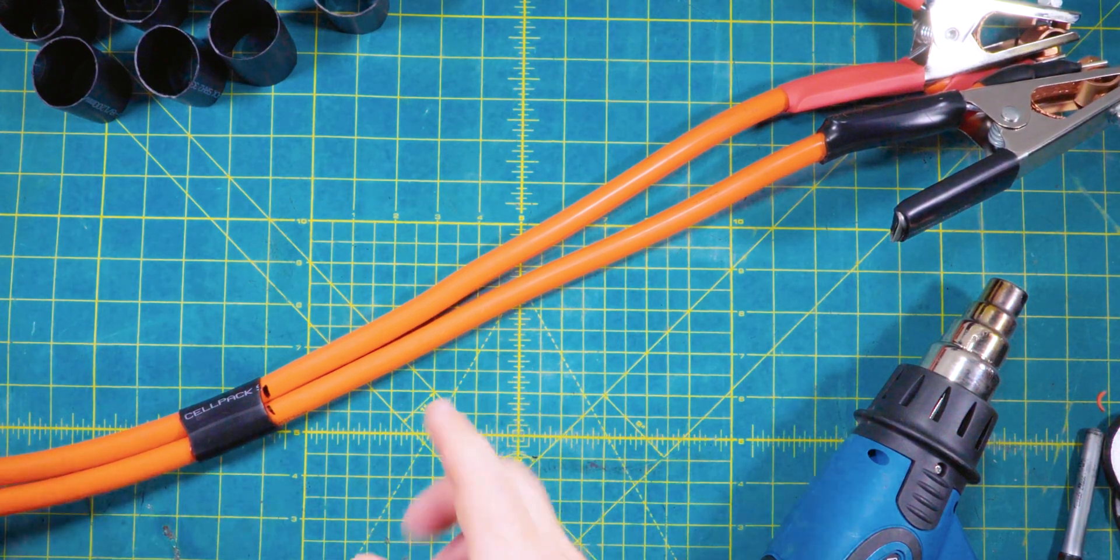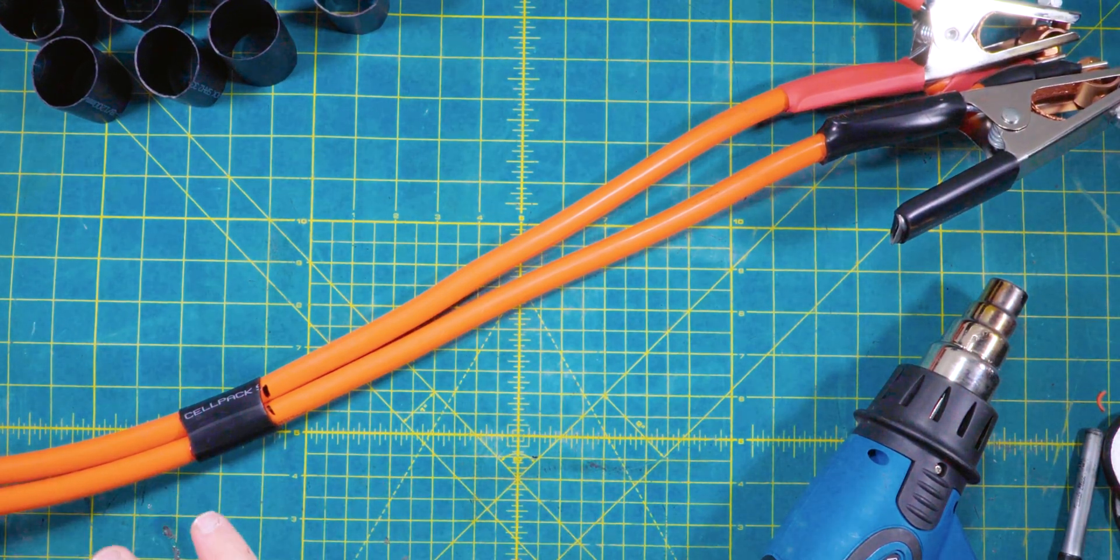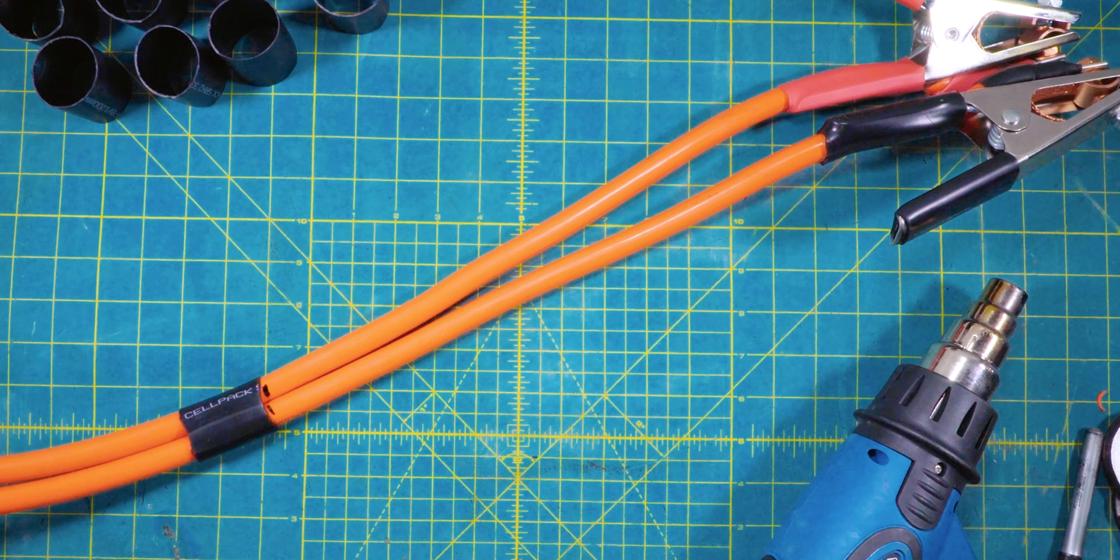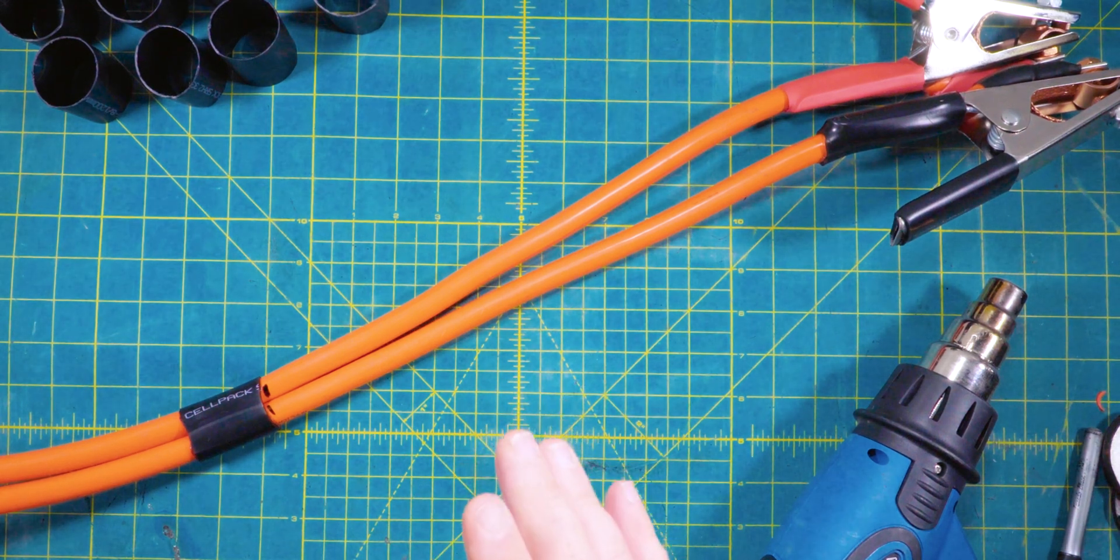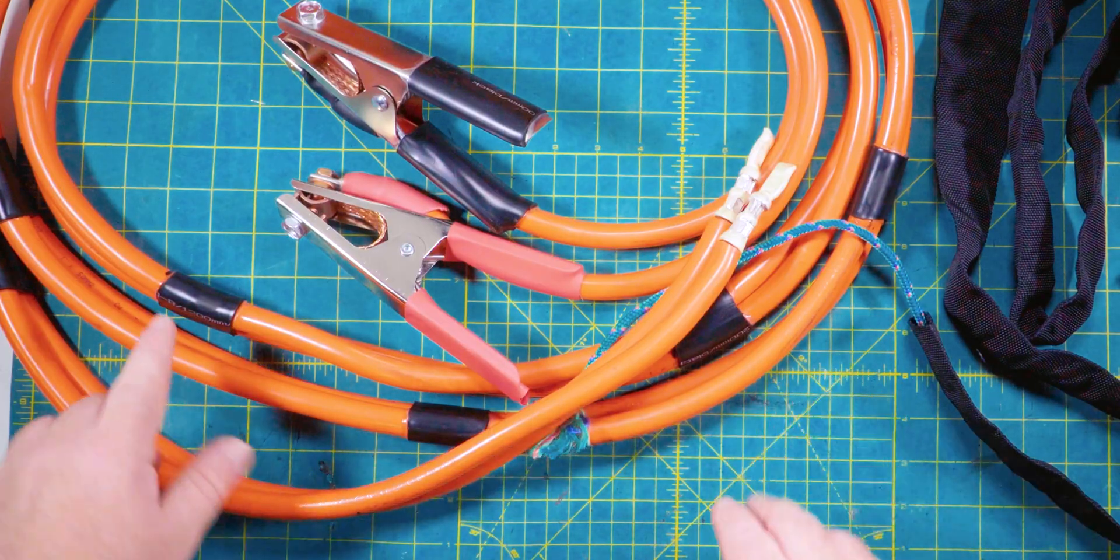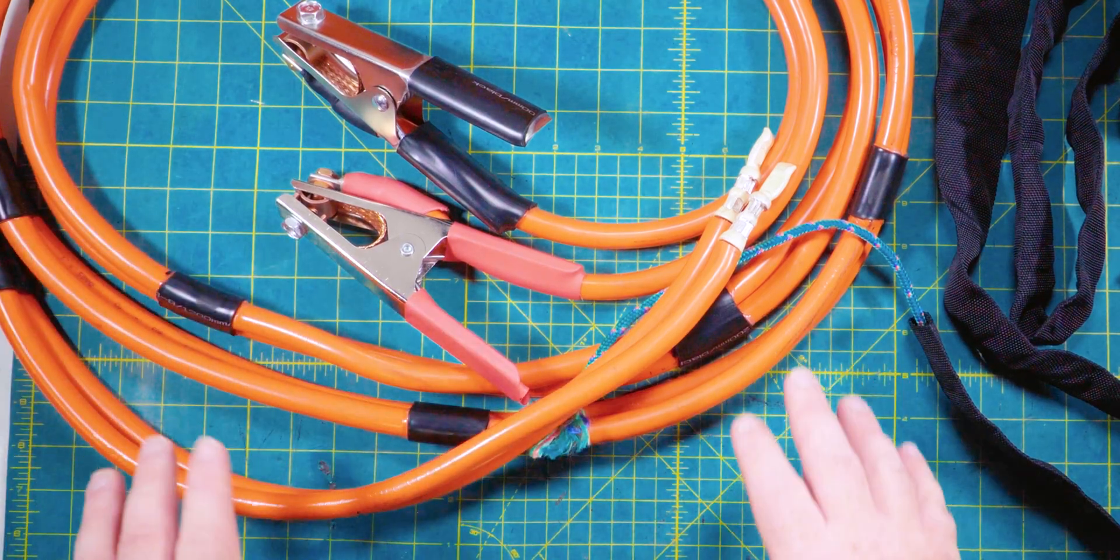With our first one down, I'll keep going every 30 centimeters or so, right to the other end, and then we can put the sheath on.